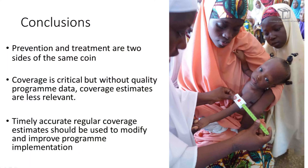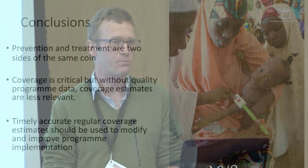To end, I'd like to clarify that prevention and treatment are two sides of the same coin. The management of severe acute malnutrition program has given health clinics in many countries the reason to exist. We have to continue to build on the energy generated by this visual proof of effective programming. Coverage is critical, but without quality program data, the coverage estimates are less relevant — when we don't have program data, we often know what the problems are before we even step up to the plate. Timely, accurate, regular coverage estimates should be used to modify and improve our program implementation. Thank you very much.